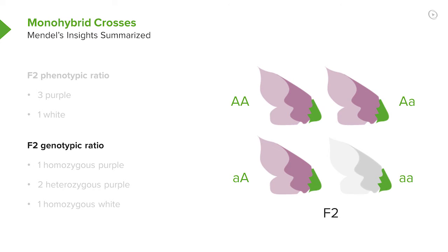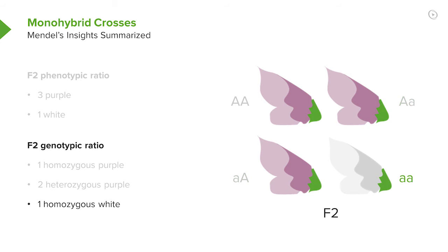Mendel proposed that there were three different genotypes, although he didn't call them genotypes because he didn't know about genes. There would be one that was true breeding, two that were not true breeding, and one carrying the recessive or hidden trait.